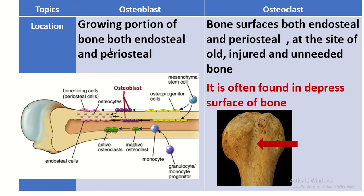The osteoblast is present in the growing portion of the bone on both the endosteal and periosteal surfaces. The osteoclast is also found on both endosteal and periosteal bone surfaces, as well as at the site of old, injured, or unneeded bone. It is often found in the depressed surface of the bones.